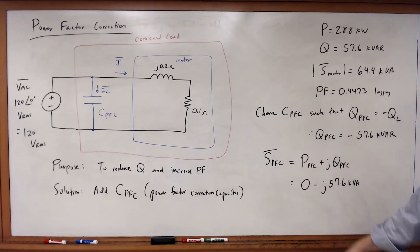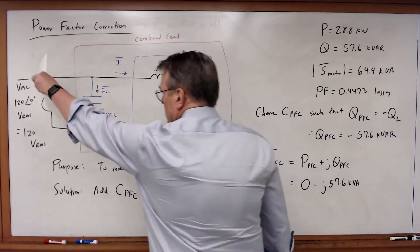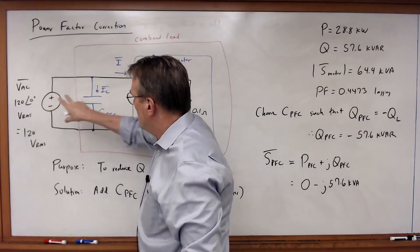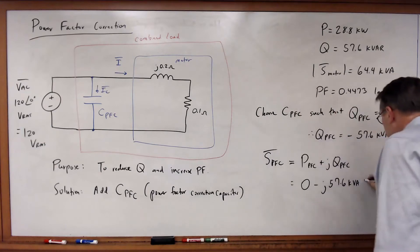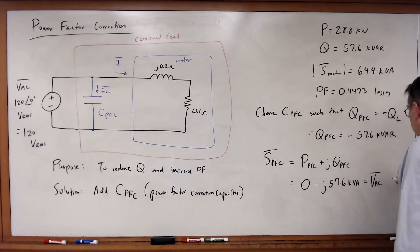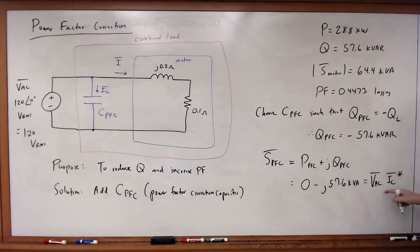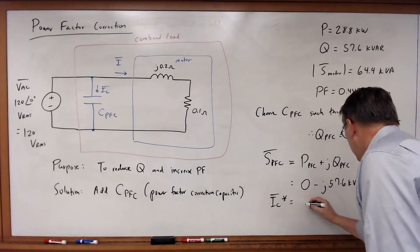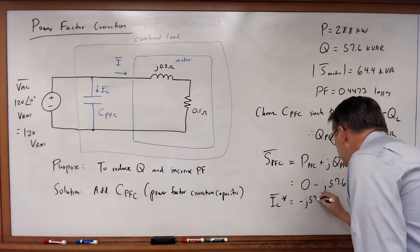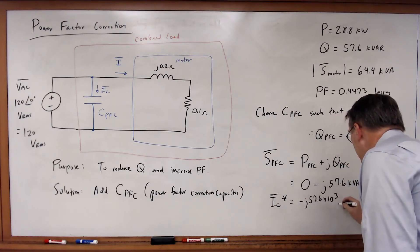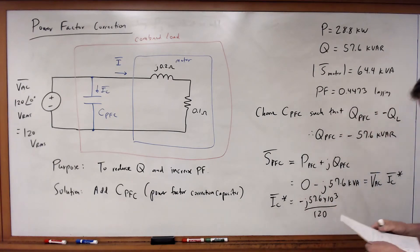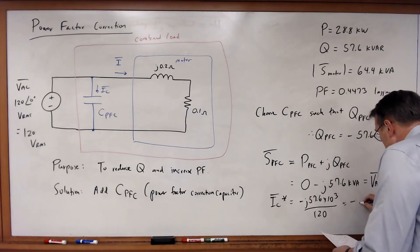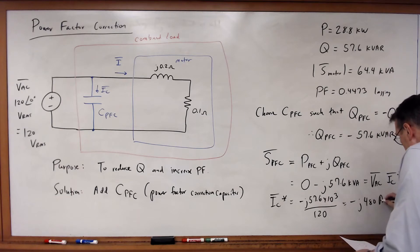But what is this equal to? This must be equal to the same 120 volts as across the capacitor. Therefore this must equal V_AC times I_C complex conjugate by definition. So I_C complex conjugate equals minus j57.6 times 10 to the third divided by 120, which equals minus j480 amps RMS.